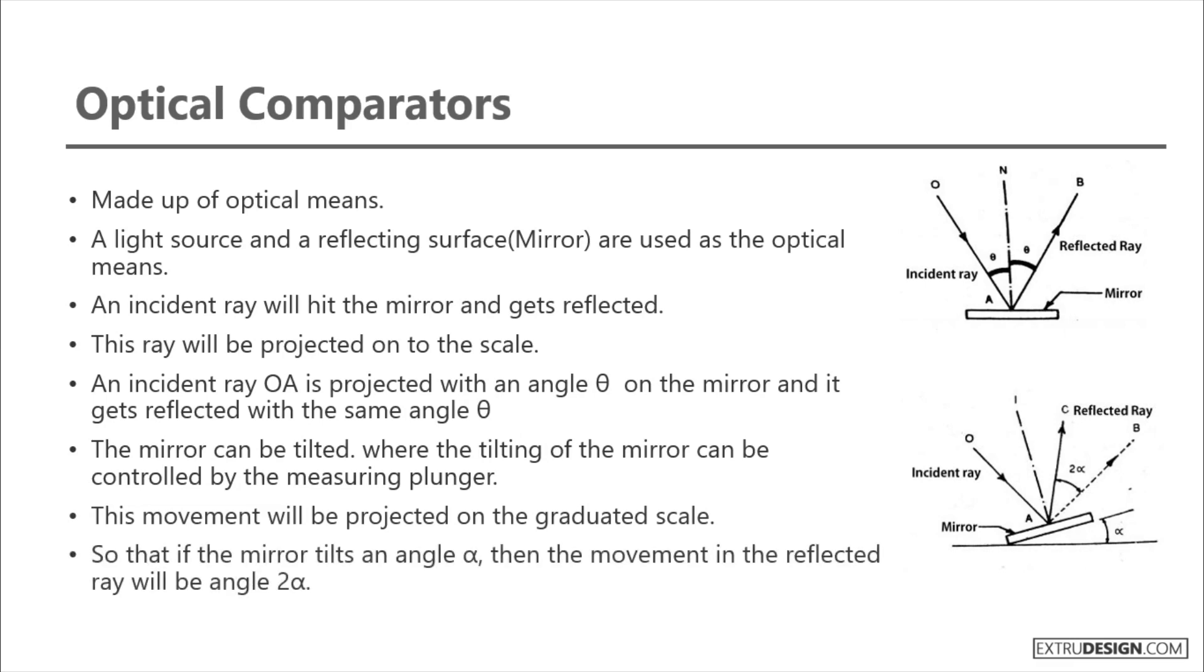So if the mirror tilts an angle alpha, then the movement in the reflected ray will be angle 2 alpha. This is about the optical comparators.